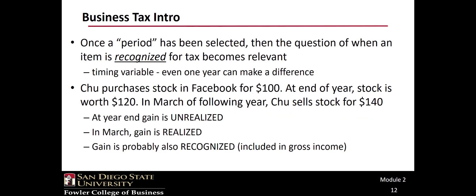Once a tax year is selected, the issue of recognition becomes important — recall from our timing variable that a year can make a difference. Let's confirm our understanding of a few terms. Consider Chu, who purchased stock for $100; at year end that stock was worth $120, then in March after year end she sold the stock for $140. At year end, the gain in the stock was unrealized — she hadn't sold it. In March when the stock is sold, the gain becomes realized, and in this case it is almost certainly recognized as well. Recognized means simply that the income or deduction is reported as part of taxable income. These are magic tax terms, so be sure to use them correctly.